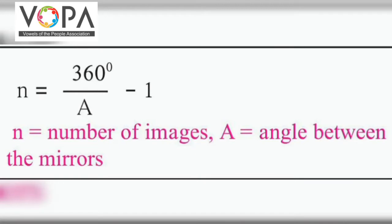Then what is the formula? The formula is n equals 360 degrees upon A minus 1, where n is equal to the number of images and A is the angle between the mirrors.